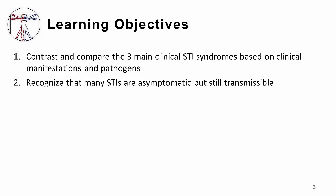These are the learning objectives for this module. I'm mainly going to introduce you to an organizational framework which will guide you throughout the whole section on sexually transmitted infections. Specifically, I want you to compare and contrast three main clinical STI syndromes: genital ulcer disease, urethritis, cervicitis, and vaginitis. Overall, from a public health point of view, you should recognize that many STIs are asymptomatic but still transmissible.